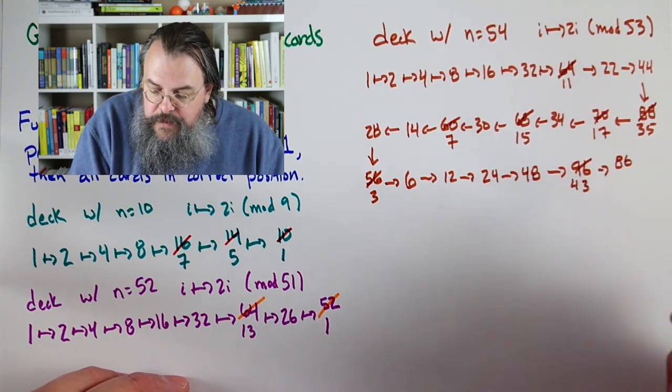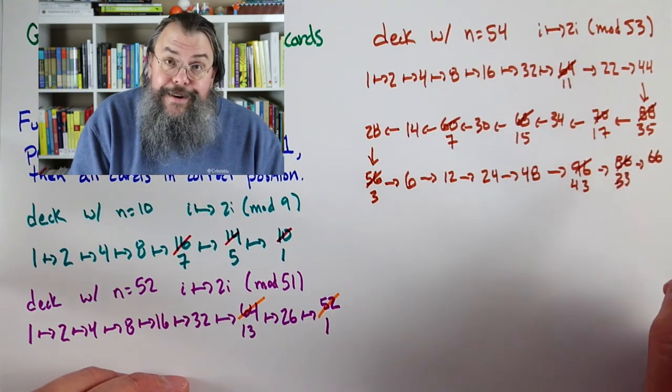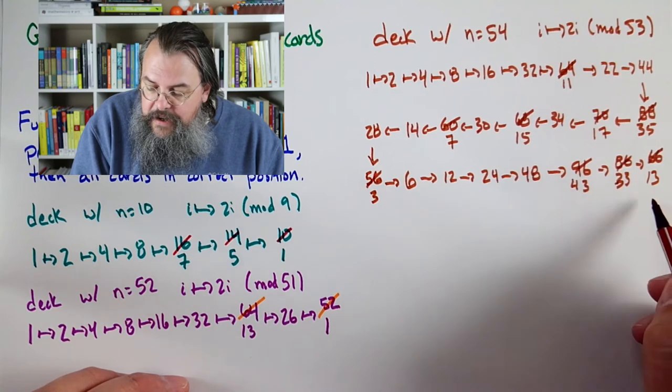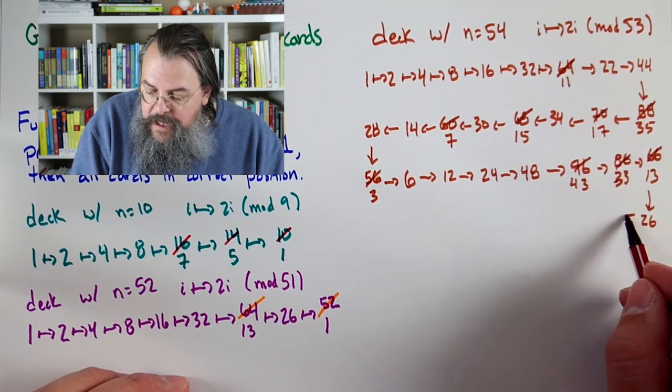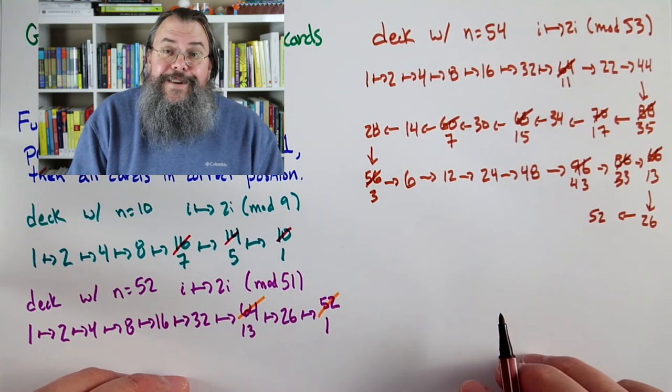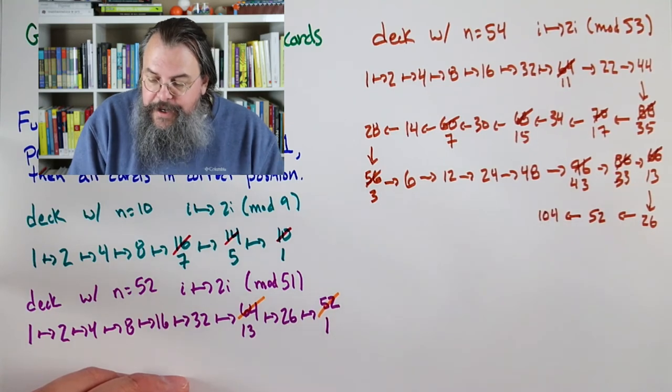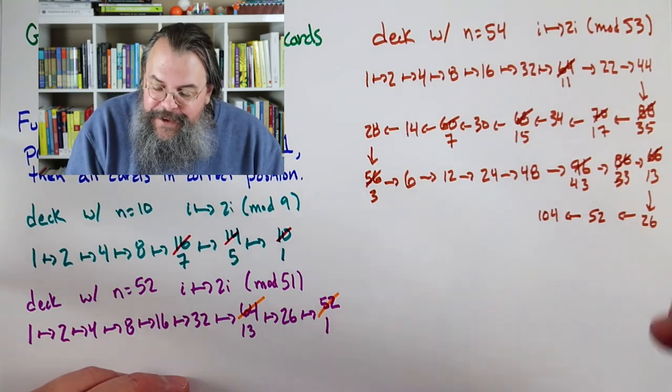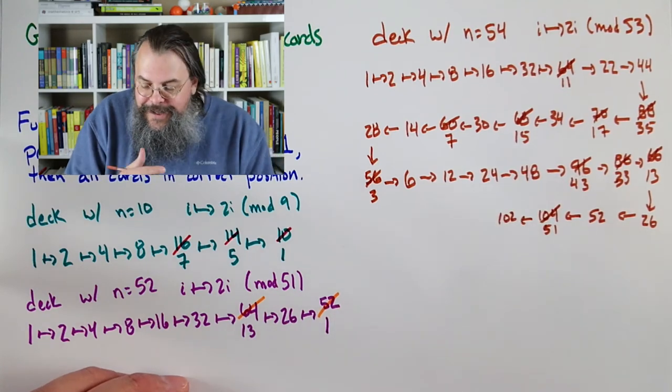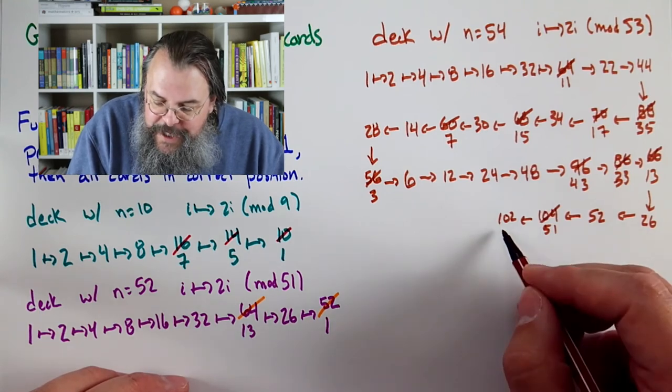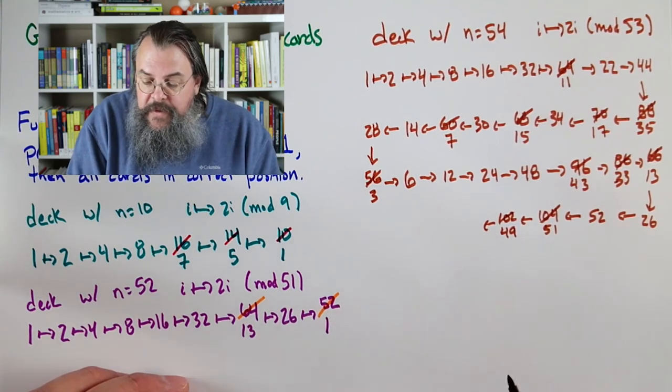So let's do, here we go, a deck with n equals 52. What's the rule? We double, but now mod 51, right, one smaller. So the rules just keep doubling until, if a number is too big, subtract 51. So 1 goes to 2, 2 goes to 4, 4 goes to 8. I love powers of 2. Sometimes I just like to walk around and think about powers of 2. It's a fun goal, how high can you get with your powers of 2? 32 goes to 64. Too big, too big. Okay, well we subtract 51. 64 subtract 51 leaves us with 13.